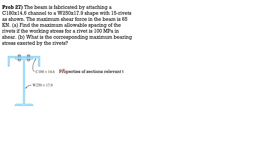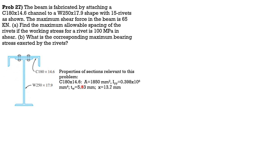The properties of the channel and the W250 by 17.9 relevant to this problem: for the channel section, area is 1850 mm², moment of inertia with respect to the y-y axis is 0.398 × 10⁶ mm⁴ (parallel to the strong axis of the W-flange), thickness of web of the channel is 5.33 mm, and the x-distance from the edge of the web to the centroid is 13.7 mm. For the W250 by 17.9, the area is 2280 mm² and the depth is 251 mm.